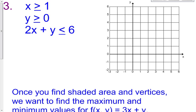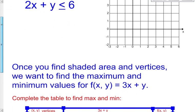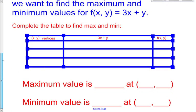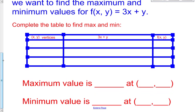Hi class. Welcome to the second half of the lesson on 3.4. We're still going to be graphing inequalities, but after we graph them, what's going to happen is that we're going to get a bounded region, and with that bounded region, we want to calculate a maximum and minimum value for an expression that is given to us.